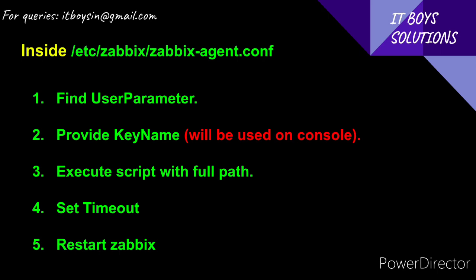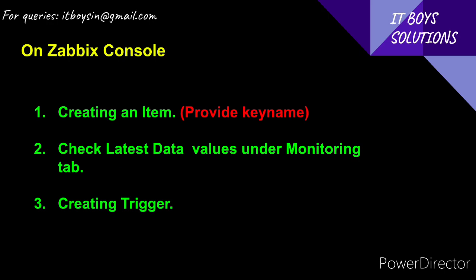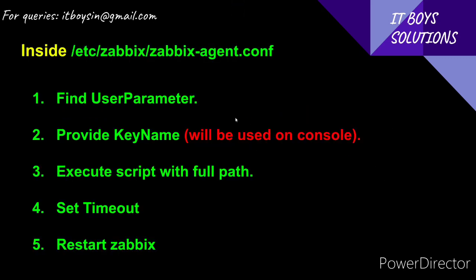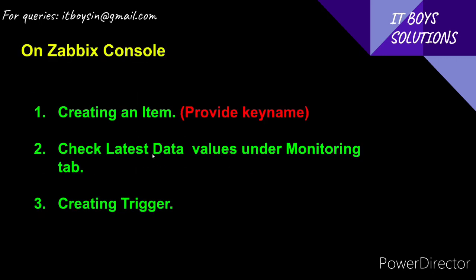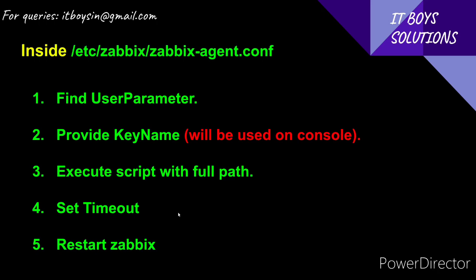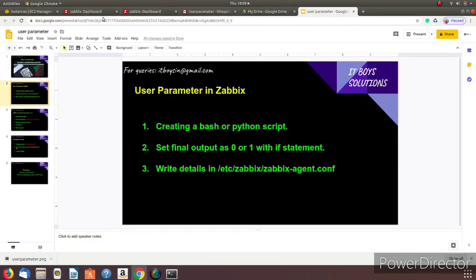There is another parameter you need to set: Timeout. This is the amount of time your script will take to execute. For example, if your script takes five seconds, set approximately ten seconds of timeout in the agent file. After that, restart the Zabbix agent. Then on the console, create an item, provide the key name from the agent file, and check the latest data values under the Monitoring tab and create a trigger.